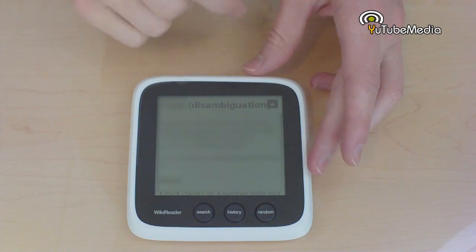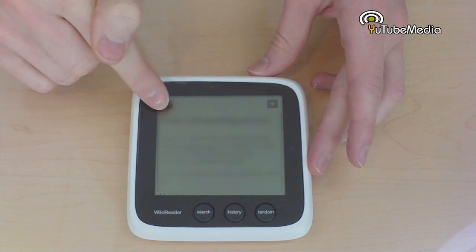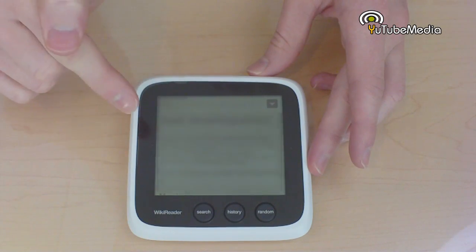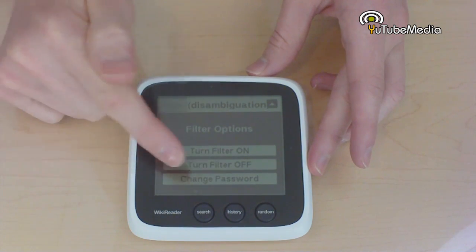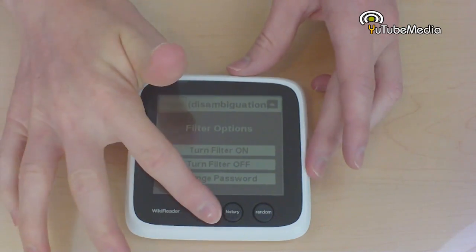You can also turn off the filter on the top right, this arrow button. You press that and over on the left you press the R button. Then it brings up turn on filter, turn off filter, or change password. That comes in really handy.